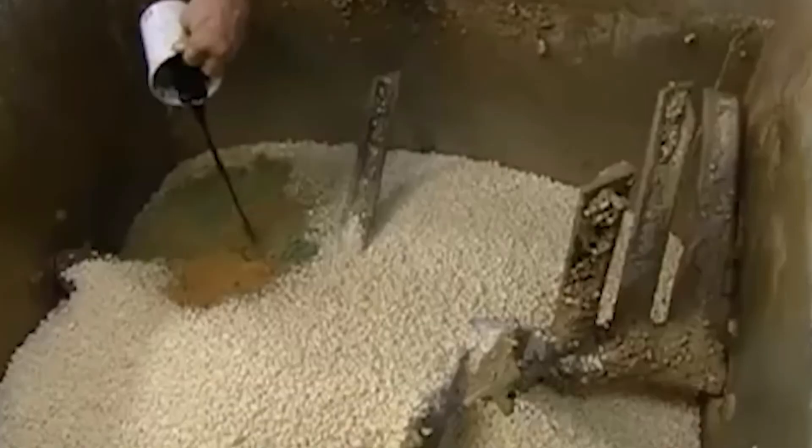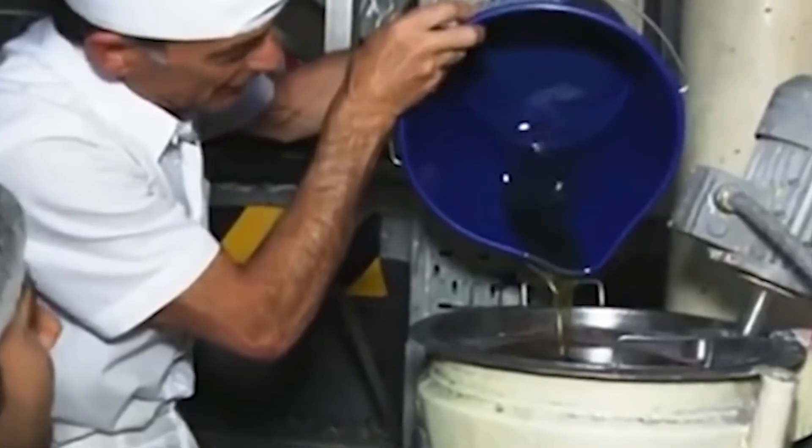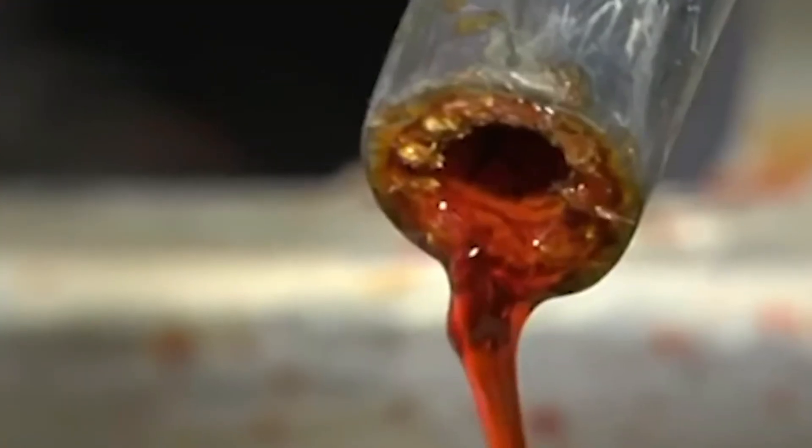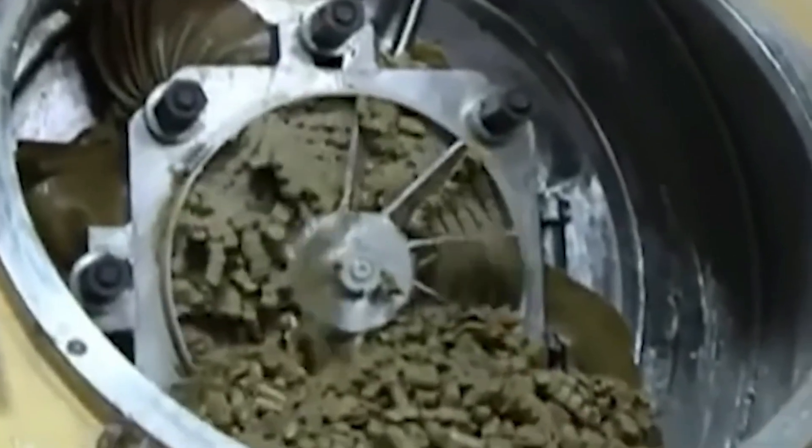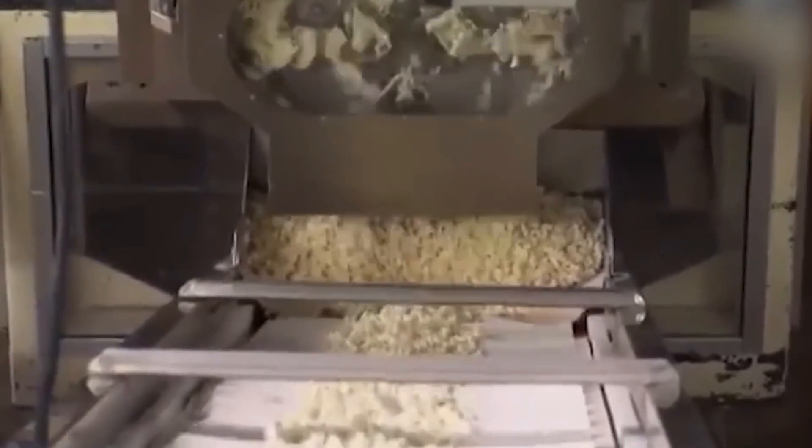Now comes the fun part: customization. The soap noodles are transferred to a large mixer, where fragrances, colorants, and essential oils are added. Want a lavender scented bar that smells like Provence in summer? Or a minty exfoliating scrub for morning showers? This is where that magic happens. Some manufacturers add moisturizing agents like shea butter or coconut milk, or exfoliants like oatmeal and crushed apricot seeds. It's like the dessert station of a soap factory. Creativity meets chemistry.